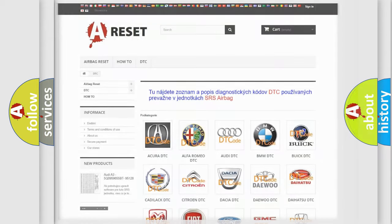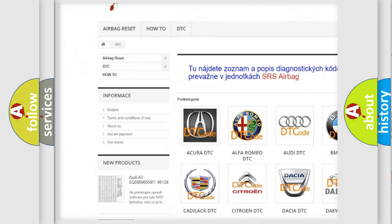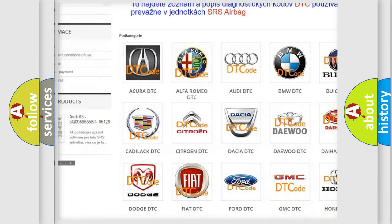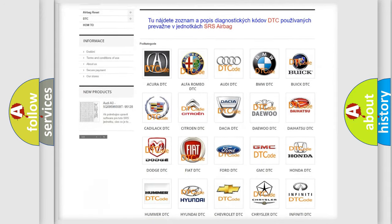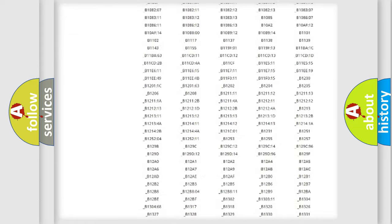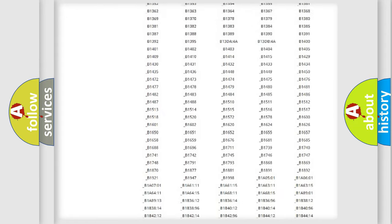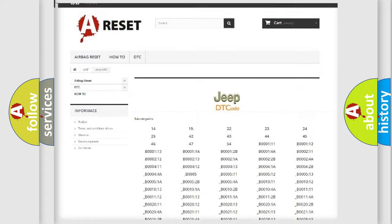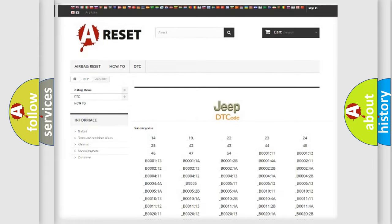Our website airbagreset.sk produces useful videos for you. You do not have to go through the OBD2 protocol anymore to know how to troubleshoot any car breakdown. You will find all the diagnostic codes that can be diagnosed in Jeep vehicles. Also many other useful things.